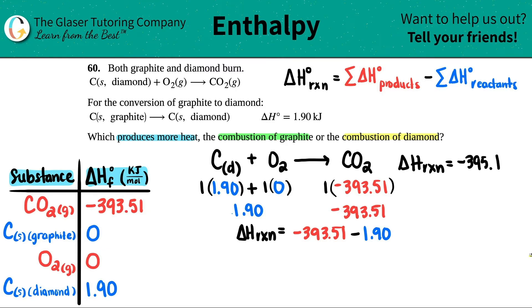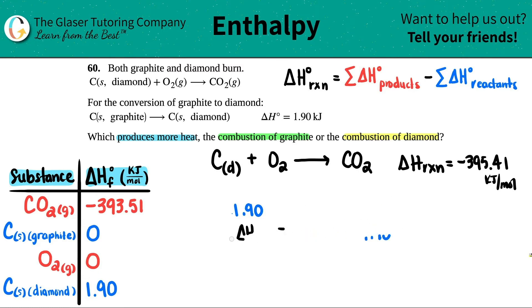Delta H for this reaction, for this combustion, is negative 395.41 kilojoules per mole. Now we just need to find out what's the combustion of the graphite. This is where we're going to be combining these two formulas together. Since I have the delta H value already, I'm just going to erase the math here because I need to get rid of the diamond in this combustion formula and place in the graphite.